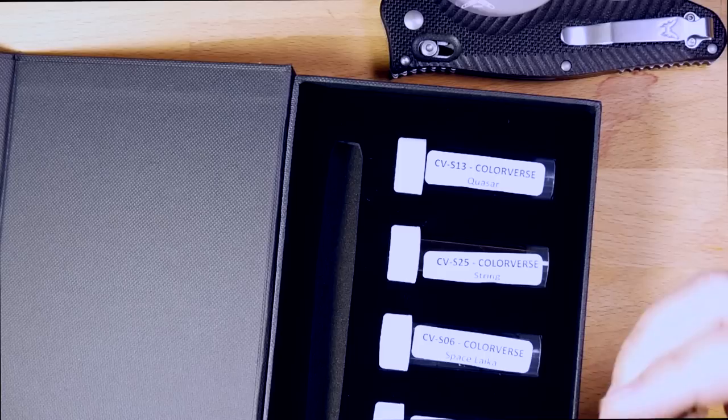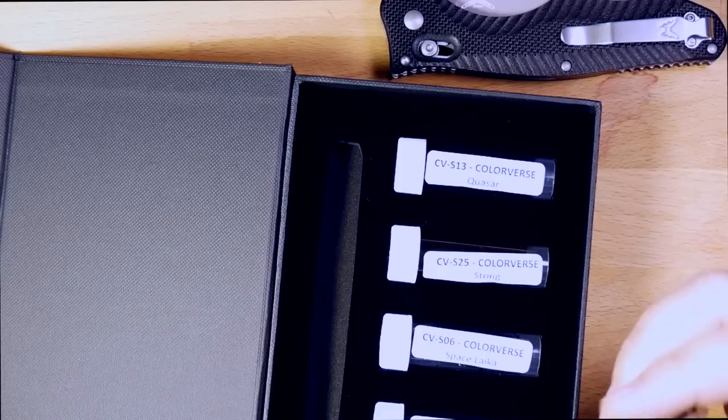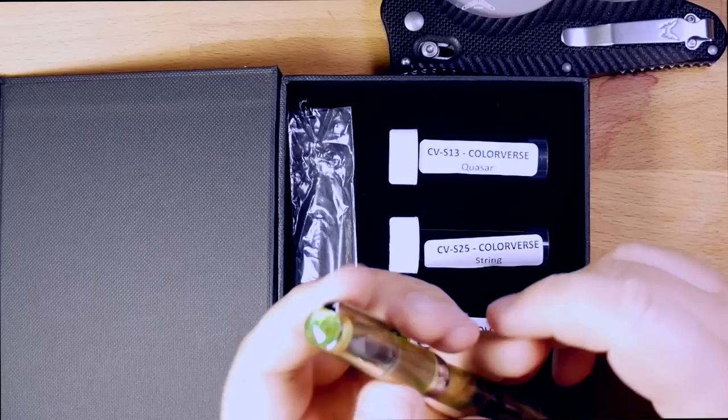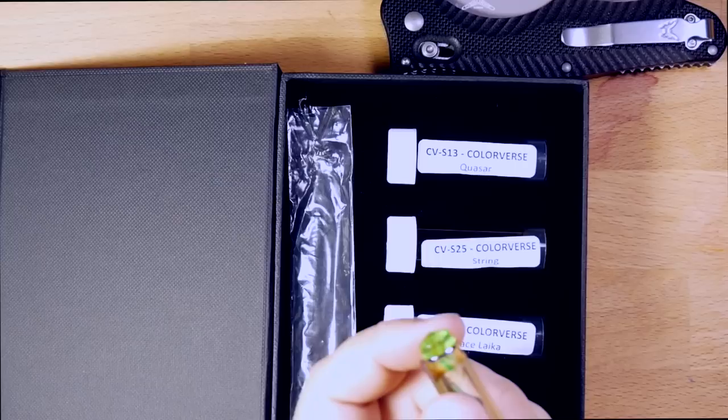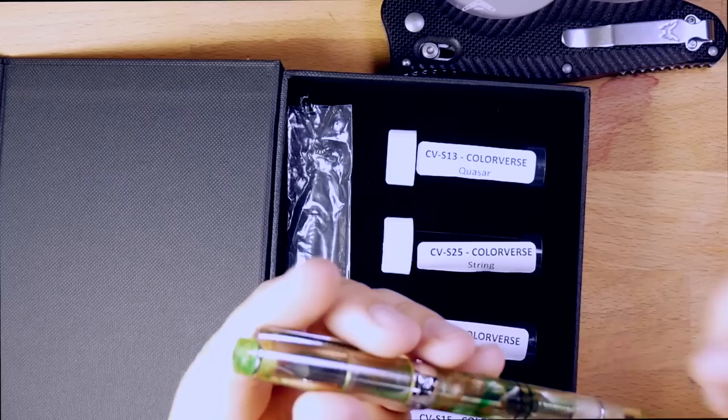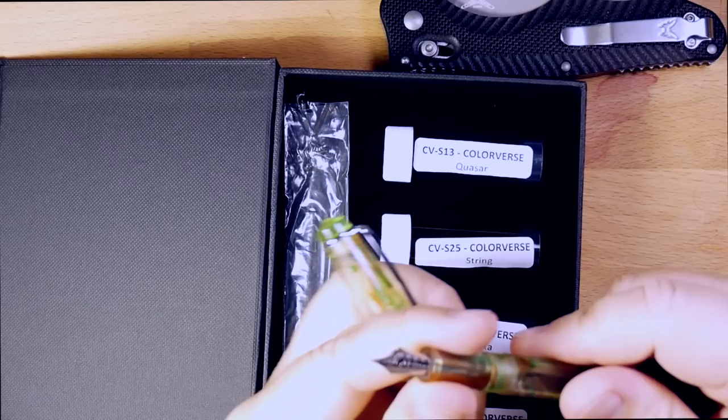All right, cool. And this pen, interesting. Let's see what this is. How do I open this? There we go. This is a pen I'm not familiar with, actually. Oh, it's a PenBBS, interestingly. And it is the, all right, this is the 309, it appears. PenBBS 309. It's a piston filler. Let's unscrew this. Didn't finish on this pen. Not bad.